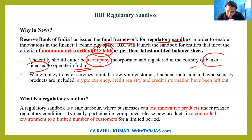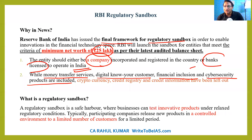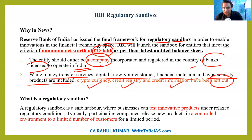Money transfer services, digital KYC, financial inclusion, and cybersecurity products are included in the regulatory sandbox. Companies can launch products like those similar to Paytm, digital KYC, financial inclusion, and cybersecurity-related products. However, cryptocurrency and credit registry — a register containing information about the credit worthiness of people — have been excluded. If a company wants to test cryptocurrency or bitcoin, they cannot participate.